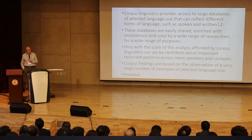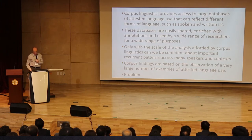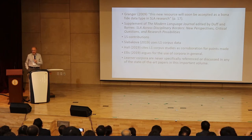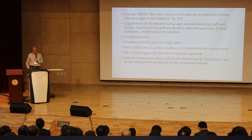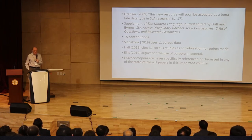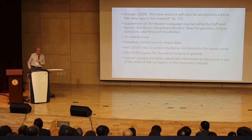I promised this would be a gently critical talk. The problem I'm going to look at today relates largely to something that hasn't happened with learner corpora — and this talk is a meditation on why that hasn't happened. From a 2009 quote by Granger: 'This new resource will soon be accepted as a bona fide data type in SLA research.' That claim was made much earlier in the life cycle of learner corpora. We have the problem that they haven't been used widely in SLA research, and I don't take that as the fault of SLA researchers.